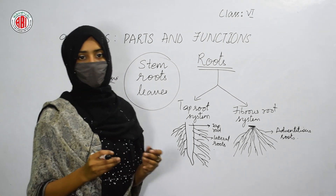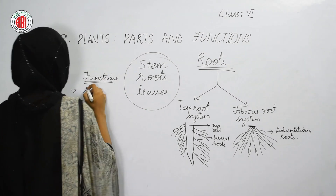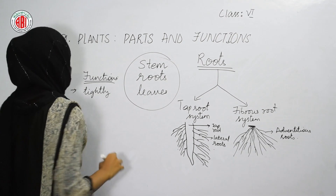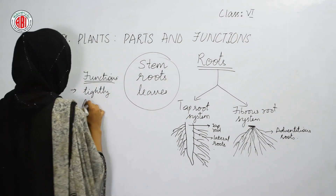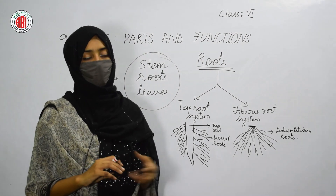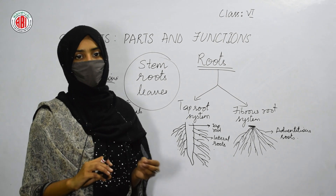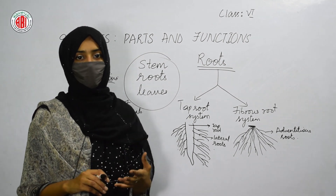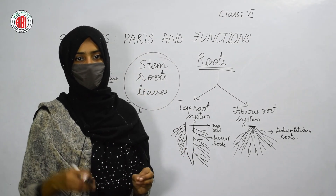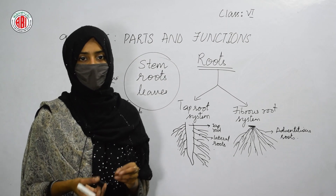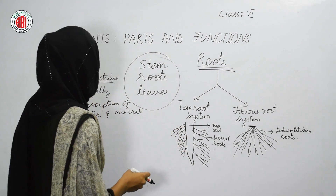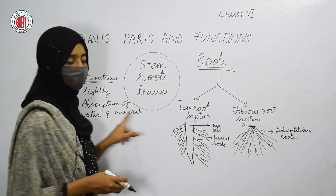The functions of roots include: first, roots help the plant to fix tightly into the soil, making the plant stand erect on the ground. A very important function of the root is absorption of water and minerals. Farmers pour water into the soil near the roots because the roots are the parts that help in the absorption of water and minerals present in the soil.